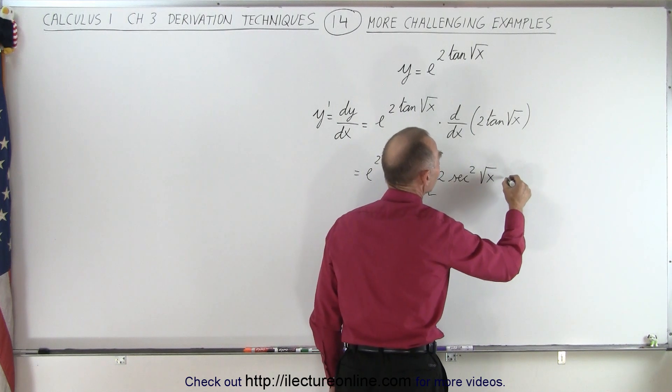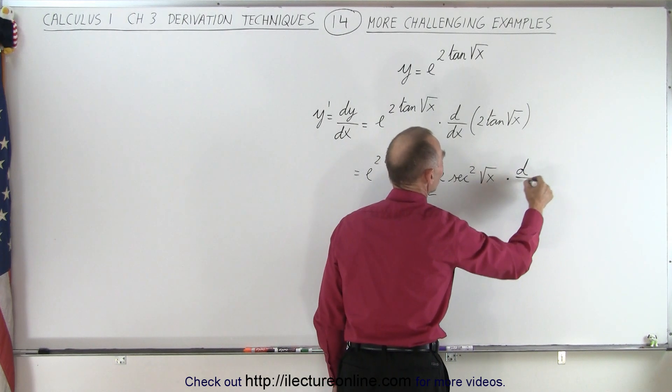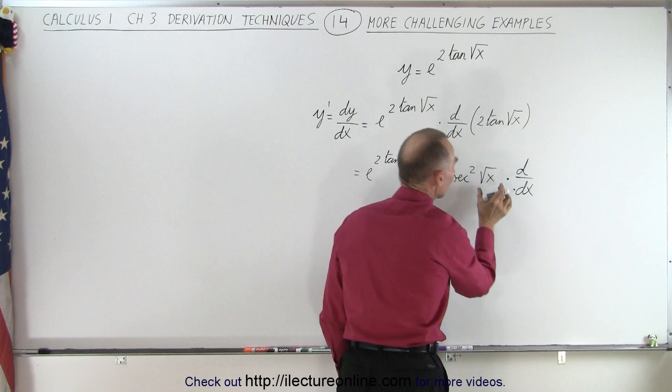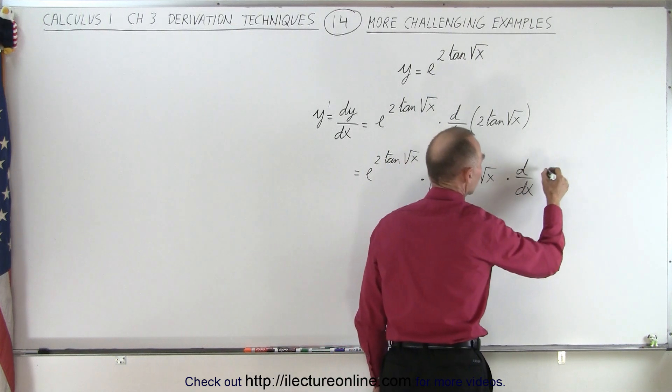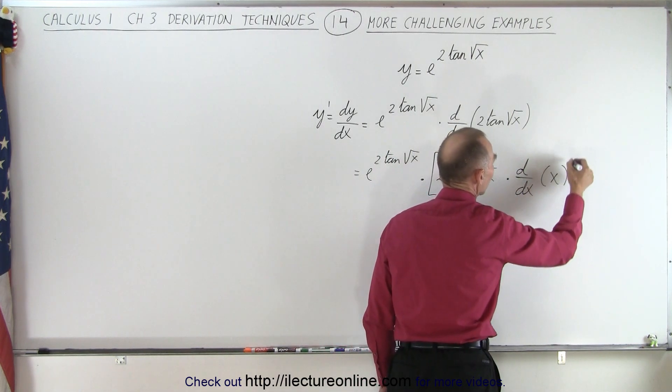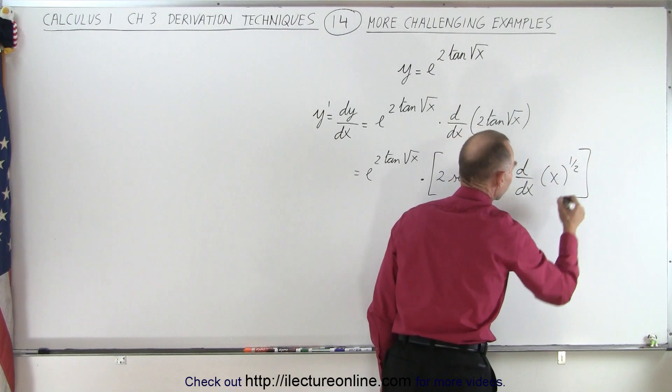But now we have to, again, multiply this times the derivative of the angle, the square root of x. So we're going to write it as x to the 1 half power because that makes it easier to work with it.